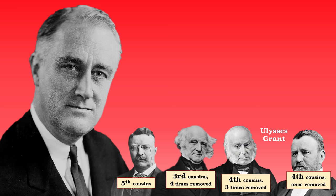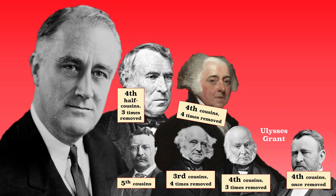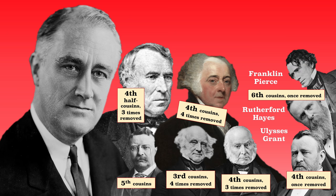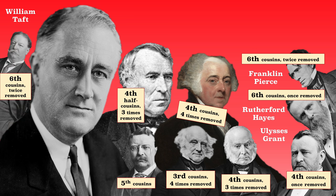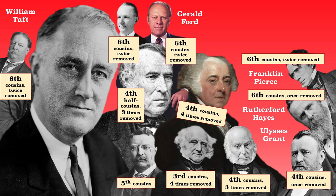FDR and John Quincy Adams are fourth cousins three times removed. He and John Adams are fourth cousins four times removed. He and Zachary Taylor are fourth half cousins three times removed. He and Rutherford Hayes, the 19th president, are sixth cousins once removed. He and Franklin Pierce, the 14th president, are also sixth cousins but twice removed. FDR is also sixth cousins twice removed with William Taft, the 27th president, Calvin Coolidge, and Gerald Ford, the 38th president.